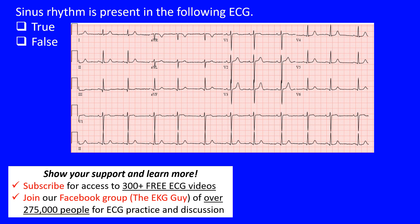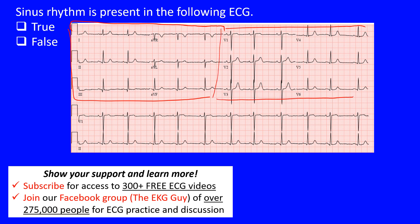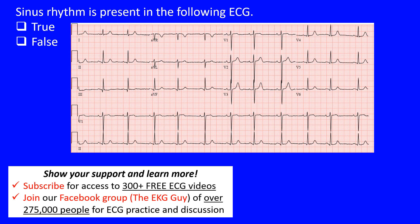Here we have a true or false question: is sinus rhythm present in this ECG? We have a standard 12-lead ECG with six limb leads on the left side and six precordial leads on the right, plus two rhythm strips — lead V1 and lead 2. The standard duration is 10 seconds from beginning to end.